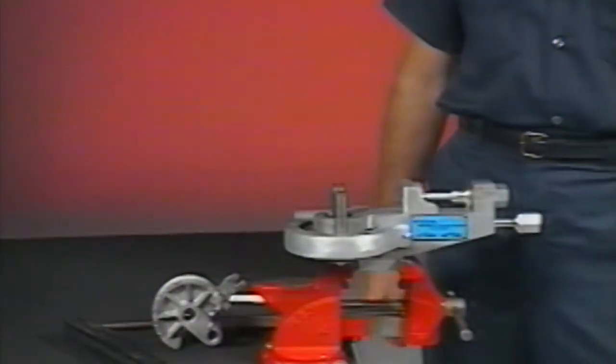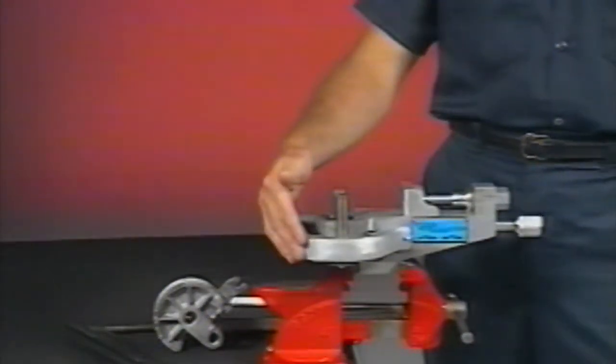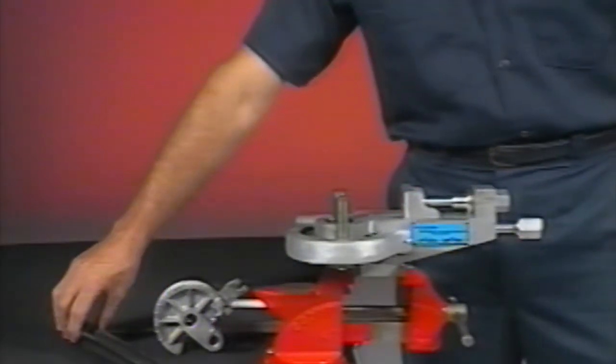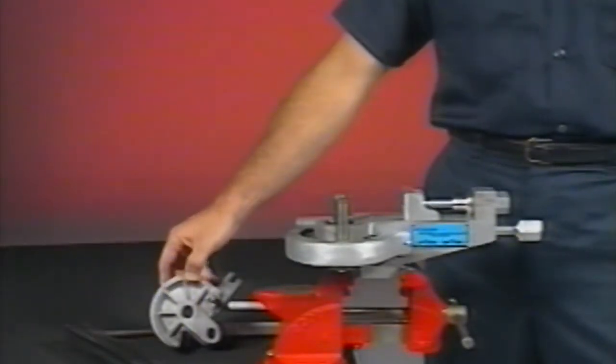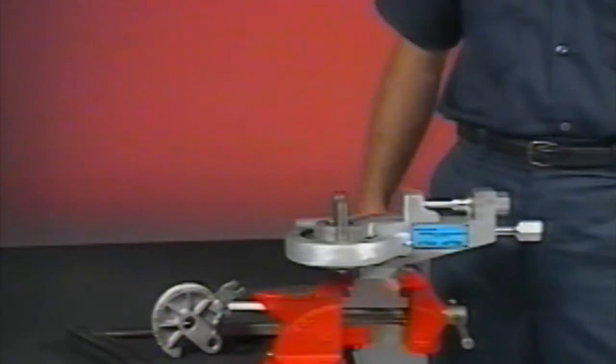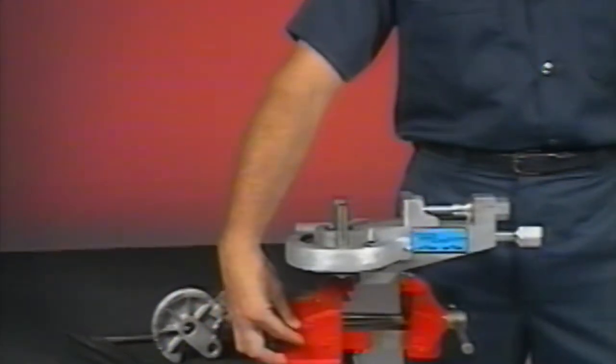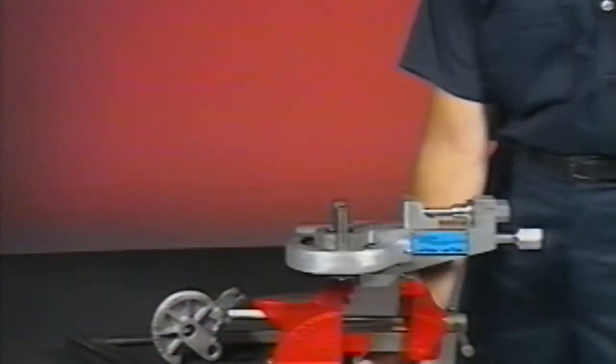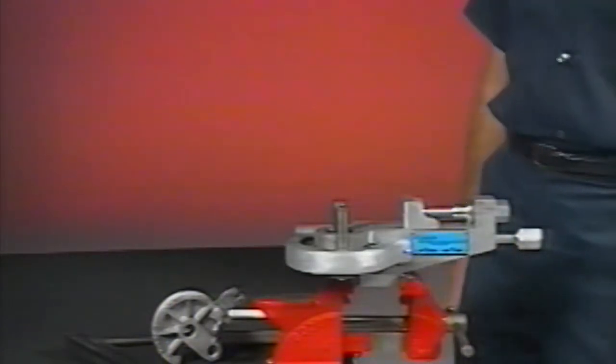Bending tubing with a model 416 bender requires the base machine, a combination slide block, and the desired radius block. It is important to secure the model 416 bender in a vise or in a mounting adapter that is fastened to a sturdy bench or table.